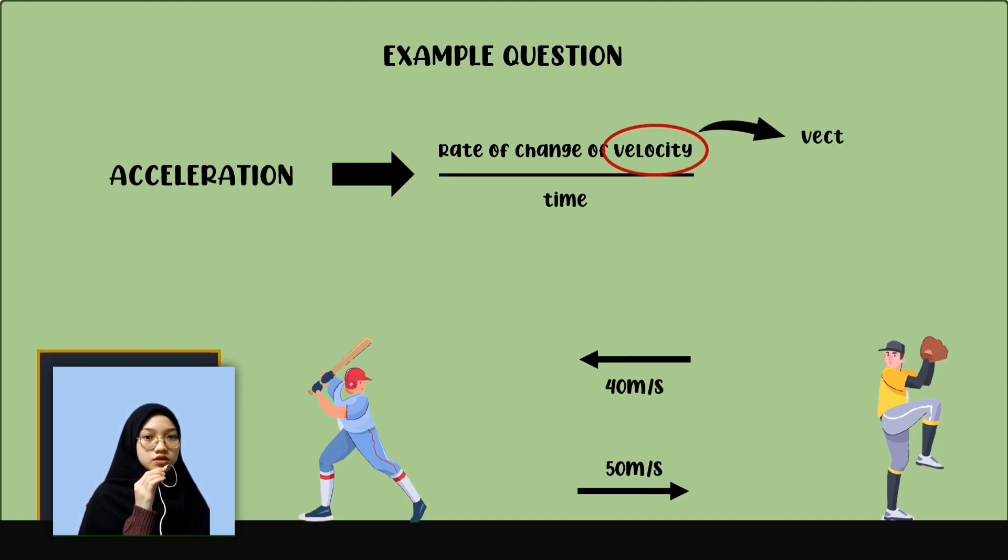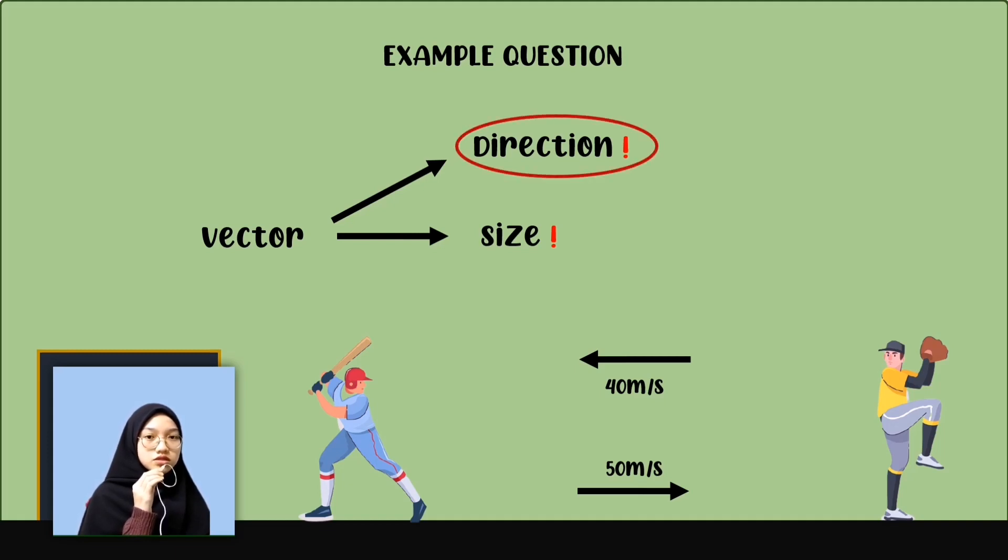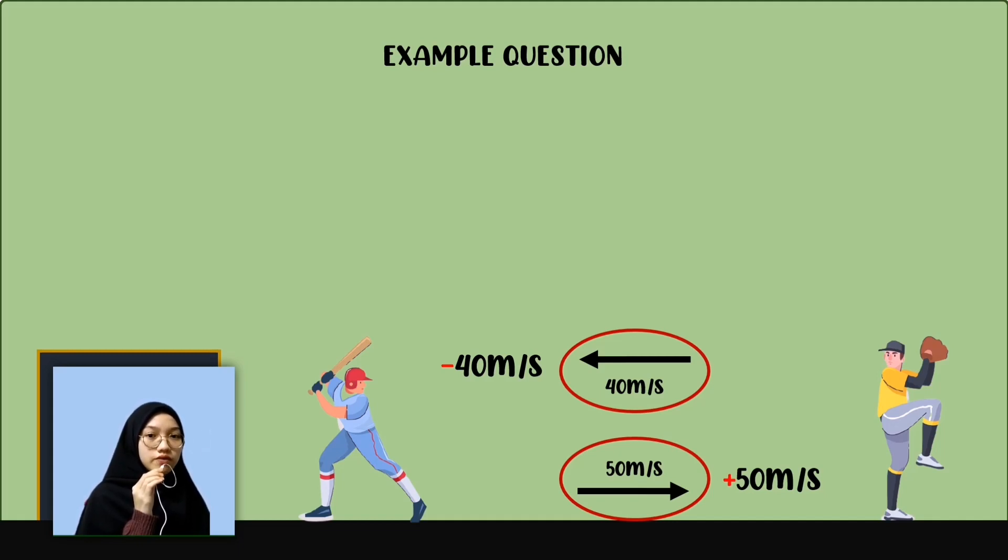Acceleration is the rate of change of velocity with time. Since velocity is a vector, this definition means acceleration is also a vector. When it comes to vectors, direction matters as much as size. In a simple one-dimensional problem like this one, directions are indicated by algebraic signs. Every quantity that points away from the batter will be positive. Every quantity that points towards him will be negative. Thus, the ball comes in at negative 40 meters per second and goes out at 50 meters per second. If we didn't pay attention to this detail, we will not get the right answer. To calculate, we just apply it in the formula that I have mentioned before.